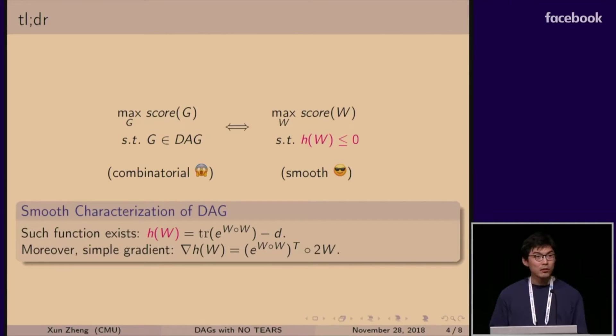So our main contribution of this paper is to show that such a function H exists, it's a smooth function, and it has a simple gradient. It can be easily implemented, it can be easily evaluated, and it can even measure how close to a DAG it is.